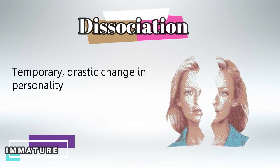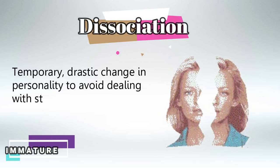Dissociation is a temporary, drastic change in personality to avoid blame or to avoid dealing with stress. For example, a loving and caring husband who one day cheats on his wife goes home and completely changes his personality — becoming careless and avoidant — to avoid dealing with the blame.